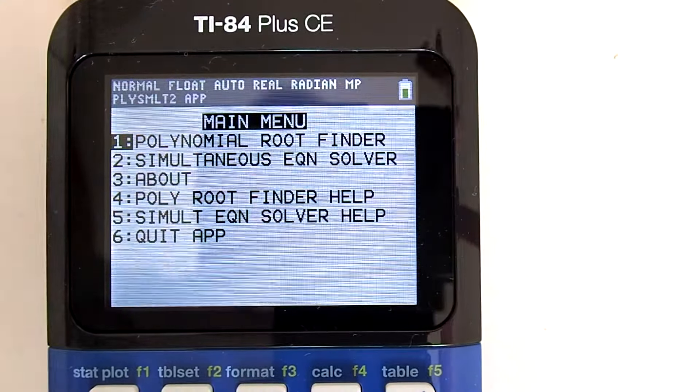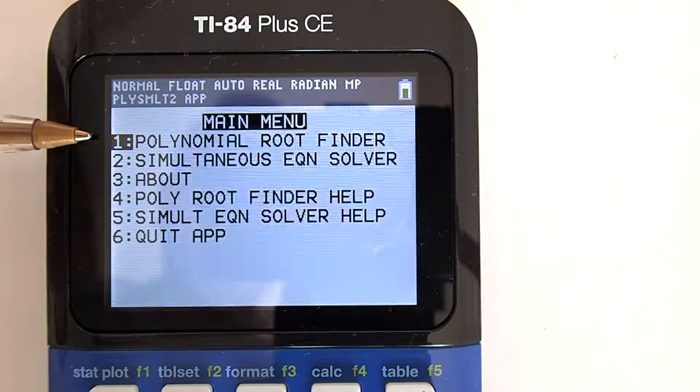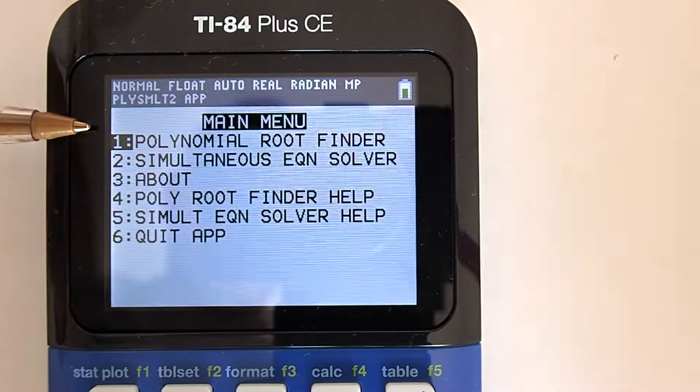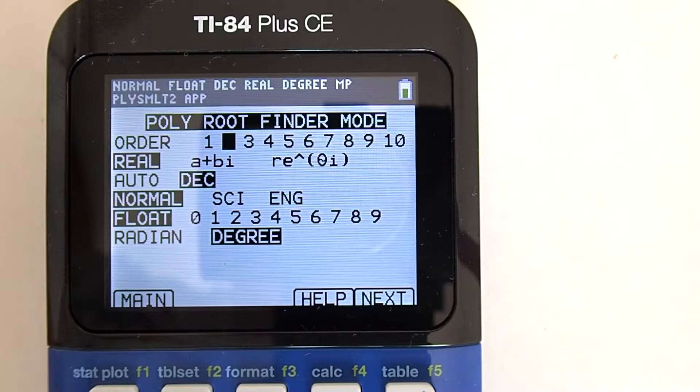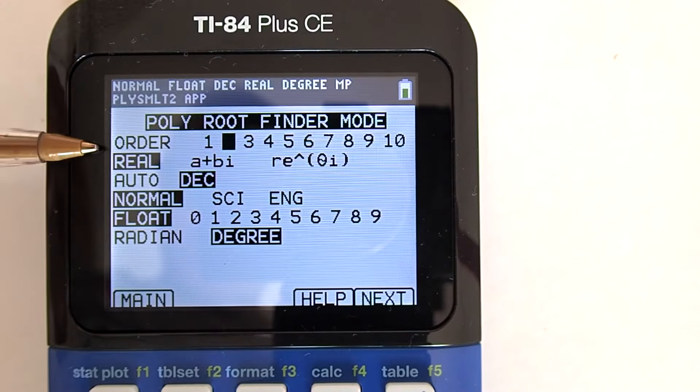This is the main menu. We want to use number 1, Polynomial Root Finder. Press Enter. These are the default settings for the Polynomial Root Finder. The only thing you may need to change is the first one, Order.